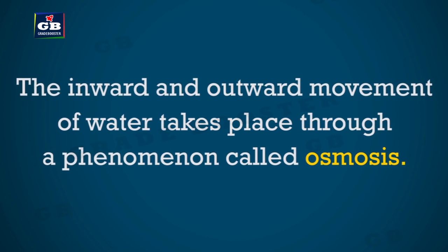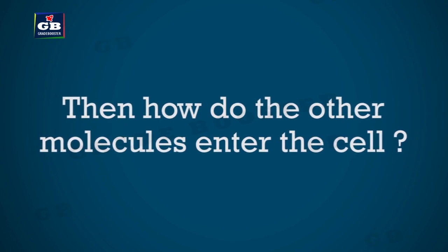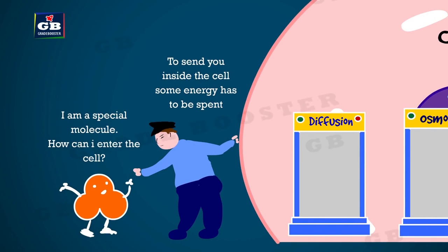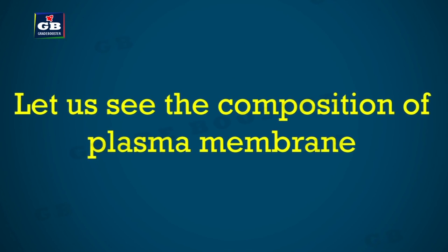There is another phenomenon through which the exchange of water takes place between the cell and its surroundings — osmosis. The movement of water molecules from a place of high concentration to a place of low concentration through a semi-permeable membrane is called osmosis. For the transfer of other materials into the cell, energy is required; this kind of transport is called active transport.